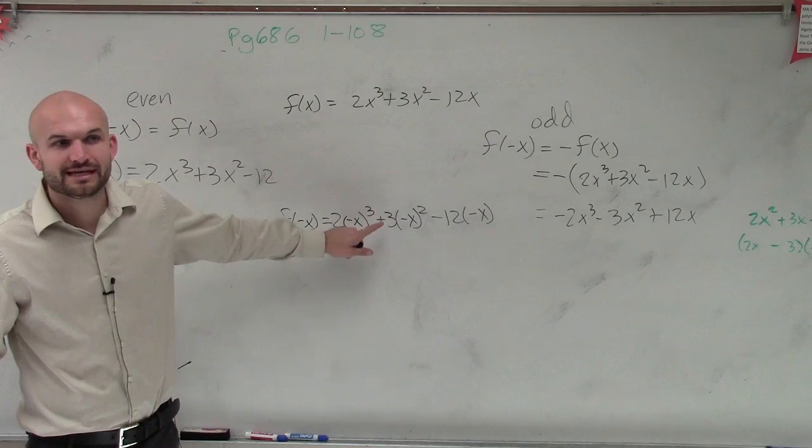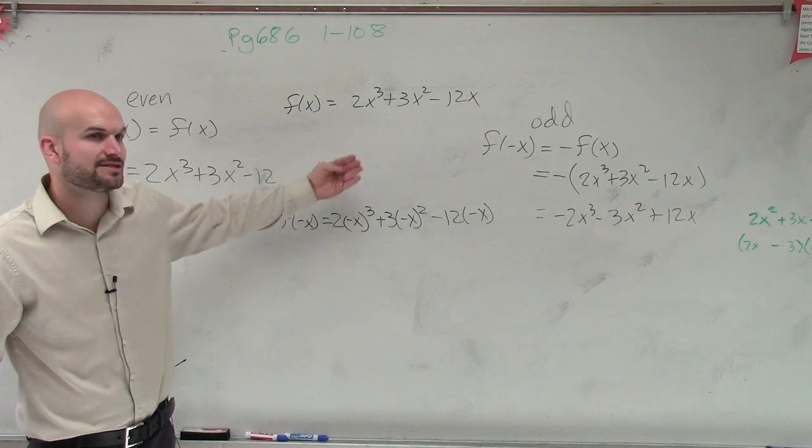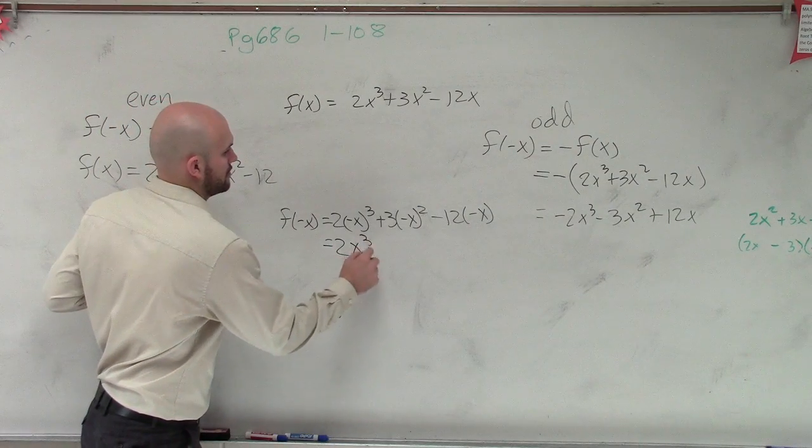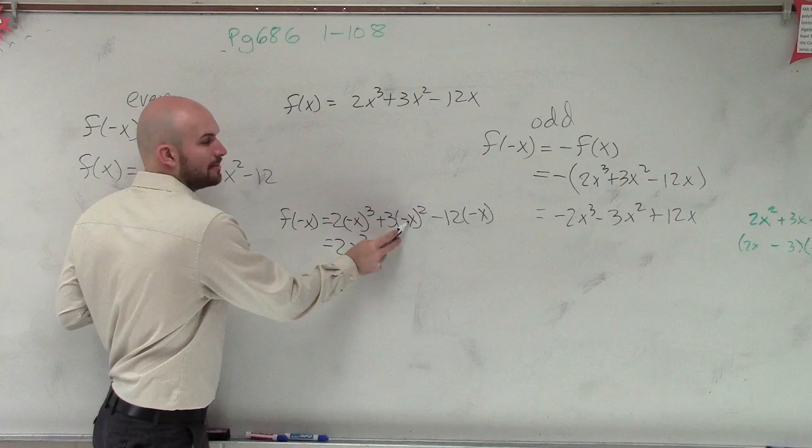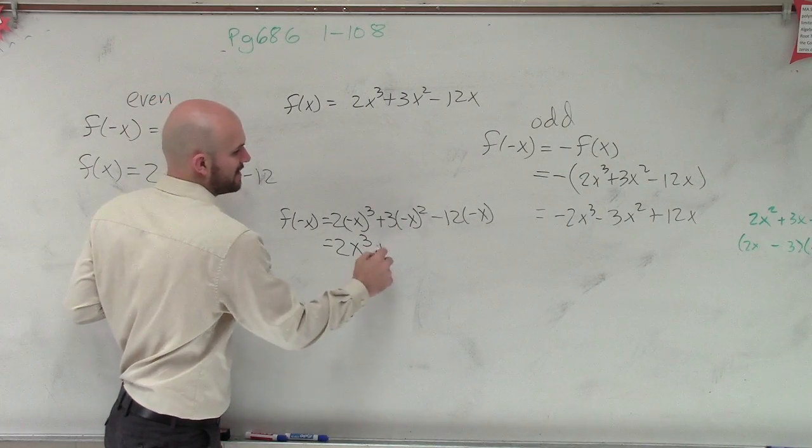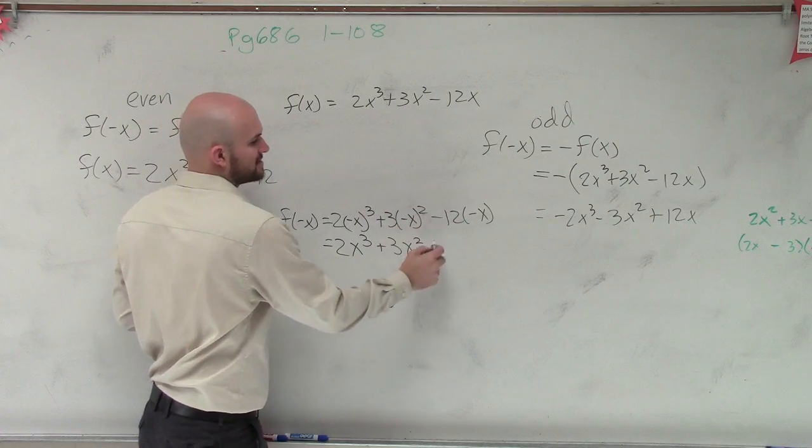Any odd number raised to an odd power is going to be negative. Or any negative number raised to an odd power is still going to be negative. Any negative number raised to an even power is now positive. So that becomes positive 3x squared, negative times a negative is a positive.